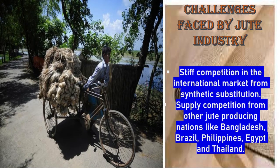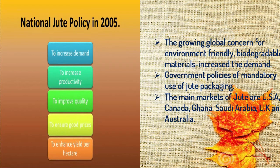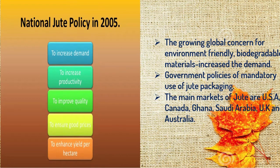The government has made efforts to increase the demand and production of jute. In 2005, the National Jute Policy was formulated to increase demand, productivity, and quality so as to ensure good prices to jute farmers and enhance the yield per hectare — that is, to increase the production of jute per hectare.